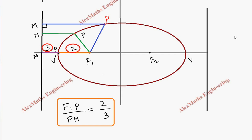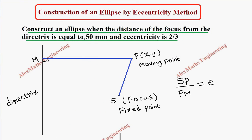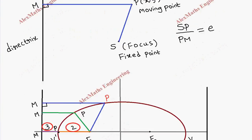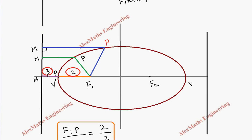Now applying these basics to the construction: the distance from the focus to the directrix is 50 mm. The ratio is 2 to 3, and this entire distance is 50 mm. Out of 50 mm divided in the ratio 3 to 2, this part is 30 mm and this part is 20 mm. So PM is 30 mm and F1P is 20 mm.